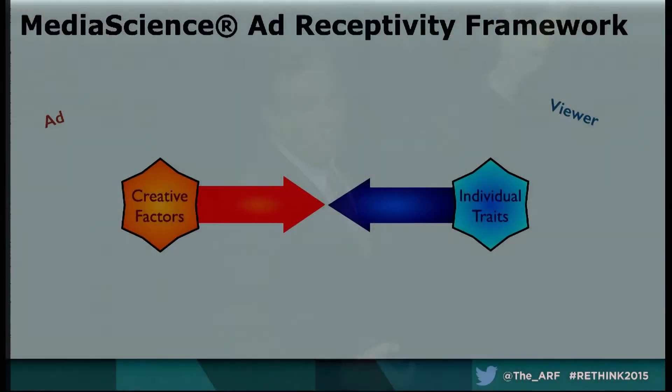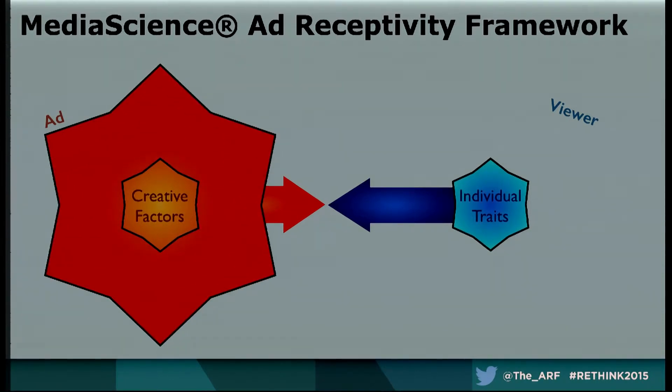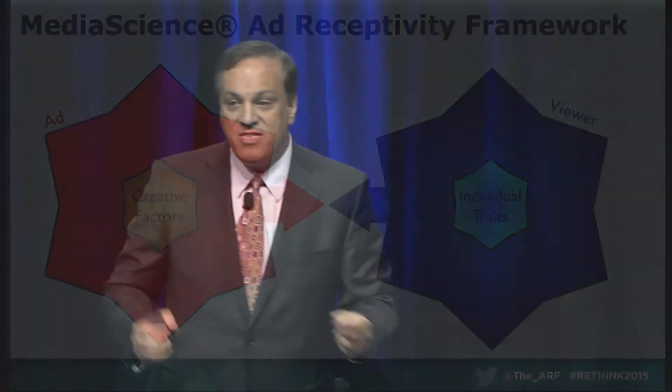We have a lot of work around individual traits — how do young people differ from older people, how are men different from women in terms of ad receptivity? But increasingly, we need to put much more attention to the environmental factors that moderate and affect the creative, and the environmental factors that moderate and affect how the individual experiences the ad. This is one of the problems I have with the entire concept of programmatic buying, because programmatic buying is unidimensional — you are failing to appreciate just how significant these environmental factors are in moderating the effect of ads. And that's actually where the research community really adds value to the entire marketing equation.